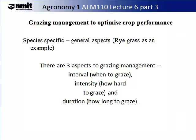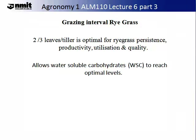In order to optimise crop performance and grazing management, you should be aware of three aspects of grazing management. These tend to be species-specific but general principles can be demonstrated — I'll use ryegrass as an example. The first thing to consider is the interval: when to graze. Then the intensity: how much to graze in one go. And finally the duration: how long to graze at any one period. The ideal grazing interval for ryegrass is between 2 to 3 leaves per tiller, which allows persistence, productivity, utilisation and quality to be maintained.